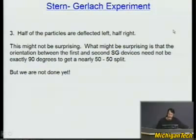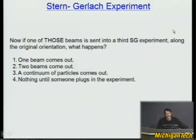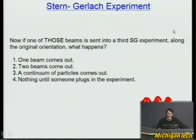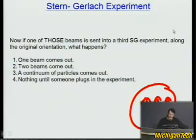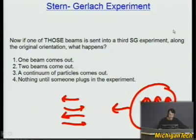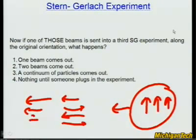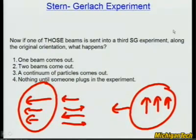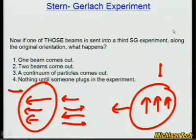Now we're going to do a third Stern-Gerlach experiment — there's no fourth, so concentrate on this one. When they came out of the first experiment, they were all spin up — well, half were spin down, but we discarded those. We sent the spin-up ones into the second device, which gave half spin left and half spin right. Now we take only the ones deflected to the right, and send those through a third device oriented up-down again.